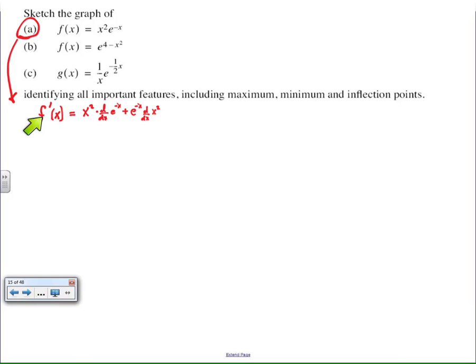So we have to find the derivative, and I see a product of two different functions, x squared and e to the negative x. So I set up my derivative using the product rule, first times the derivative of the second, plus second times the derivative of the first. The derivative of e to the negative x is e to the negative x, times the derivative of negative x, which is negative 1. e to the negative x carries down, and the derivative of x squared is 2x.